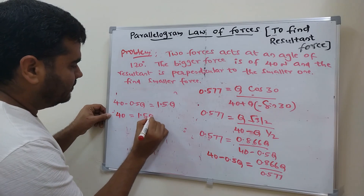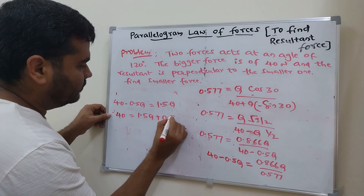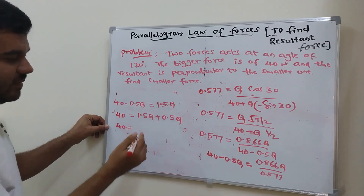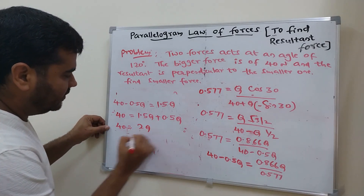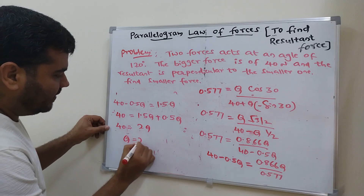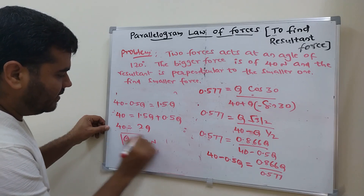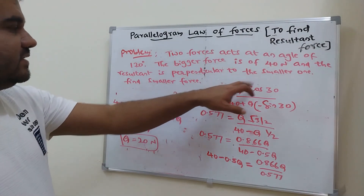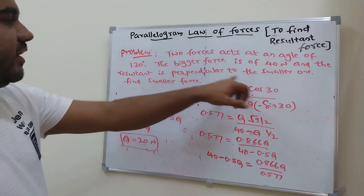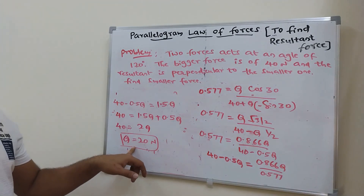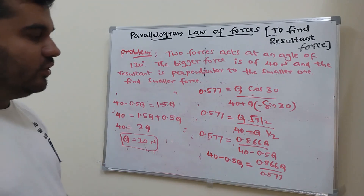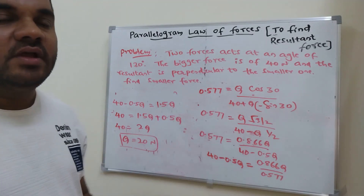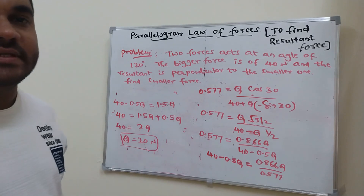Therefore Q equal to 20 Newton. This is the smaller force. This is how you solve the problem using the parallelogram law of forces.